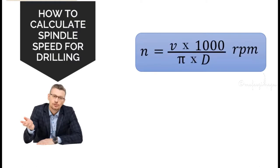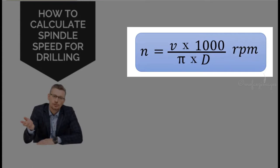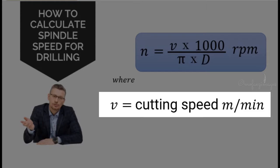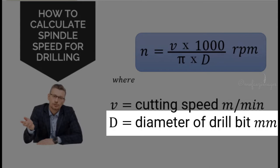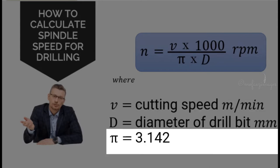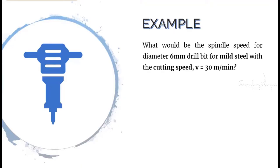The formula for spindle speed is: N equals V times 1000, divided by pi times D. The unit is RPM, where V is the cutting speed in meters per minute, D is the diameter of the drill bit in millimeters, and pi is 3.14.